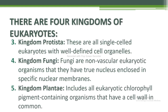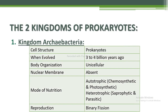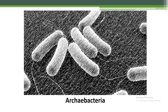The first kingdom is Archaebacteria. Cell structure: prokaryote that evolved about 3 to 4 billion years ago. Body organization: unicellular, nuclear membrane absent. Mode of nutrition: autotrophic — chemosynthetic and photosynthetic; heterotrophic — saprophytic and parasitic. Reproduction by binary fission. Archaebacteria are special since they live in some of the harshest habitats and are named accordingly: halophiles (salty areas), thermoacidophiles (hot springs), and methanogens (marshy areas). They differ from other bacteria in having a different cell wall structure, which is prominent in their survival in extremely harsh conditions.